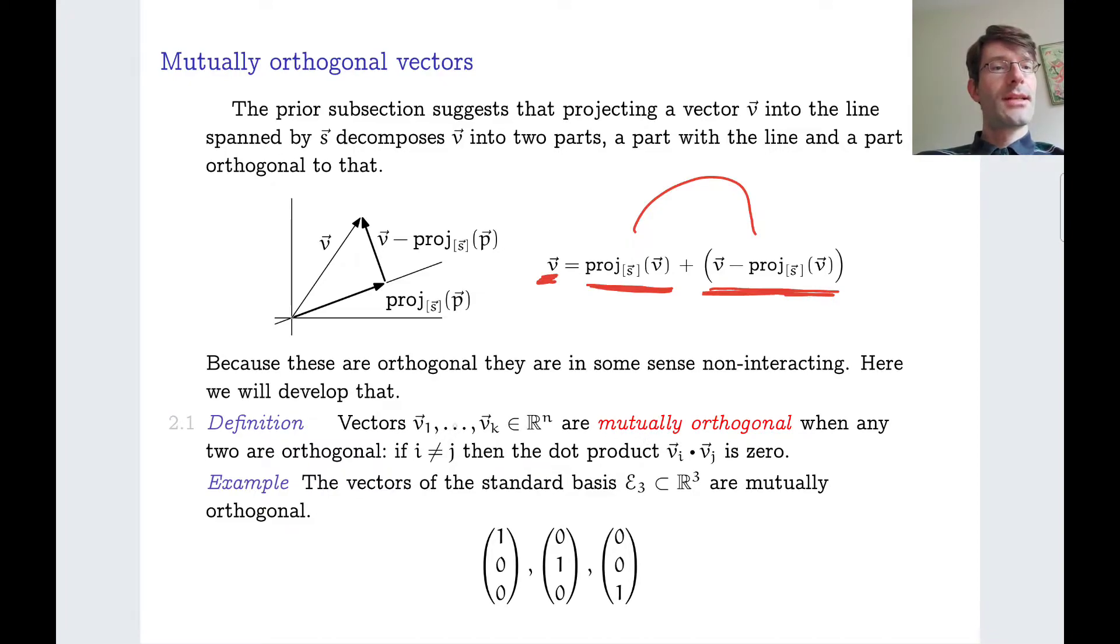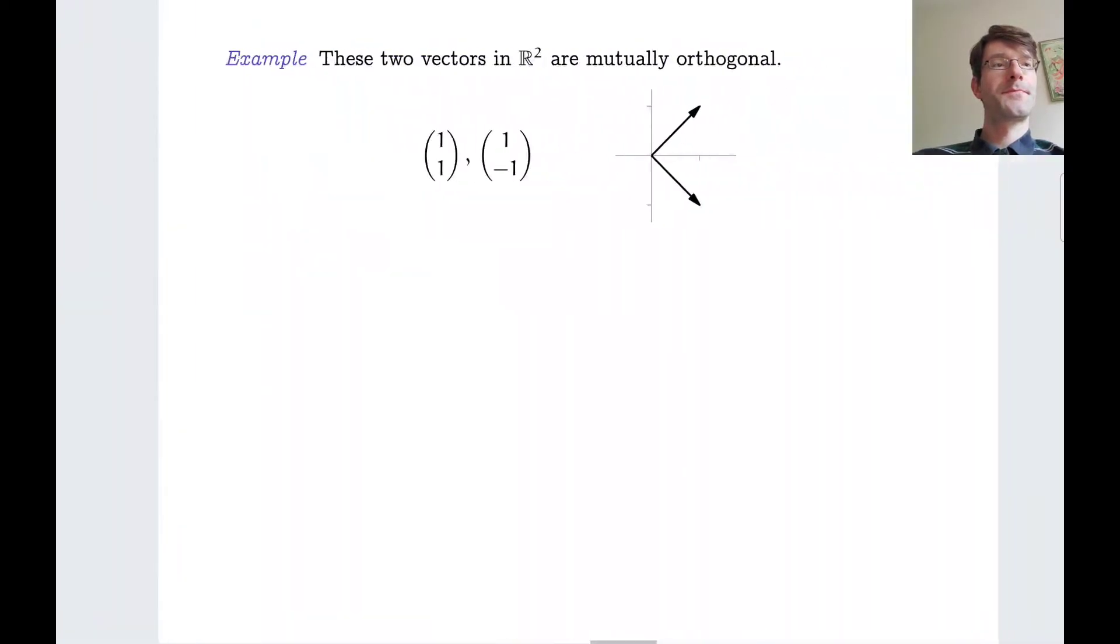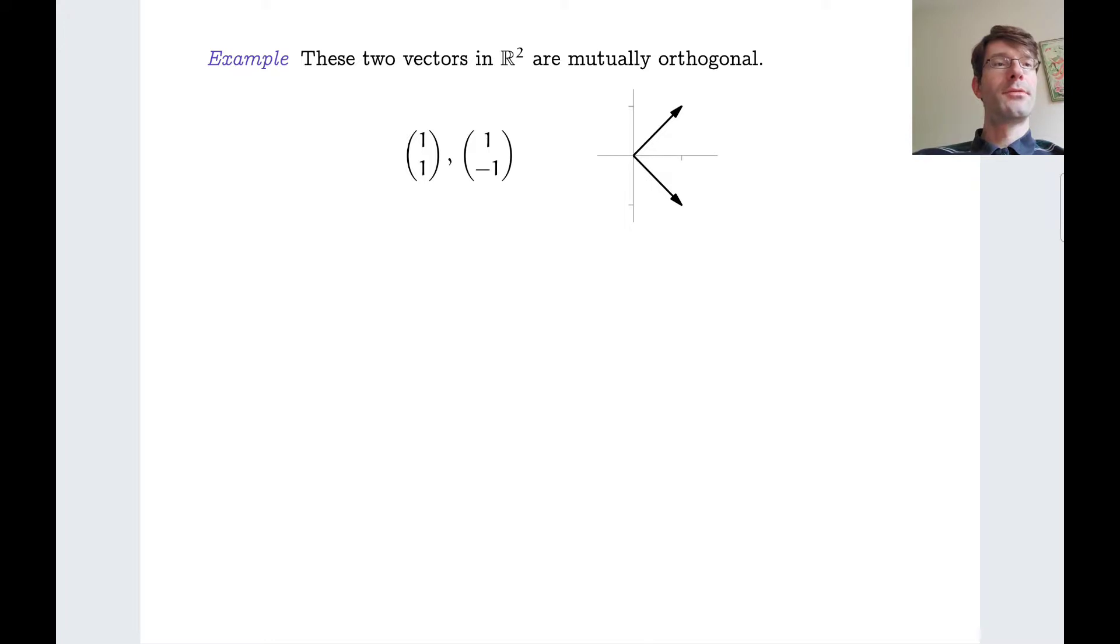Let's define this notion here. Vectors v1 up to vk are mutually orthogonal when any two of them are orthogonal. So no matter which two you take, if you take their dot product, you will get the number zero. You might also simply call such vectors pairwise orthogonal. A good example is, of course, the vectors from the standard basis. They are mutually orthogonal. Well, these two vectors in R2 are also mutually orthogonal.